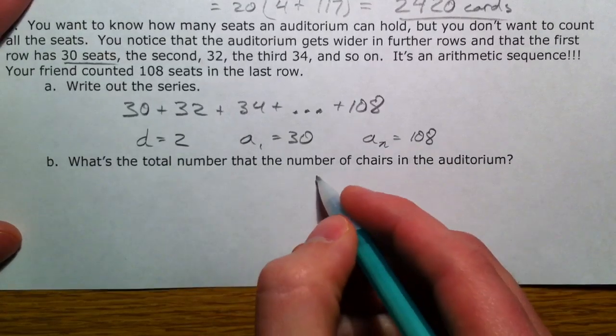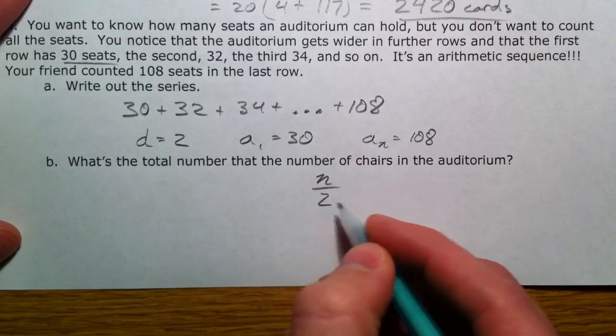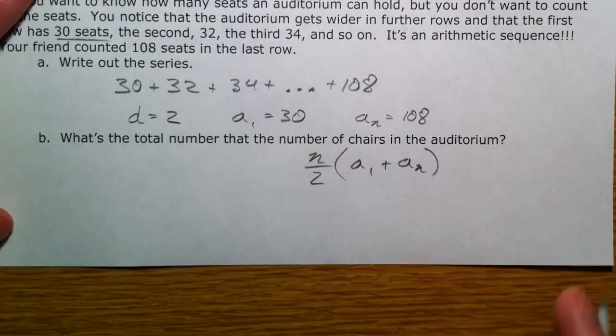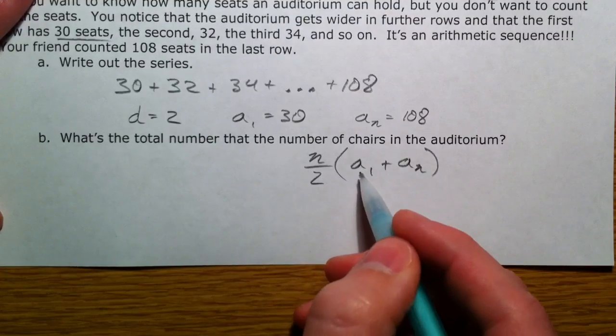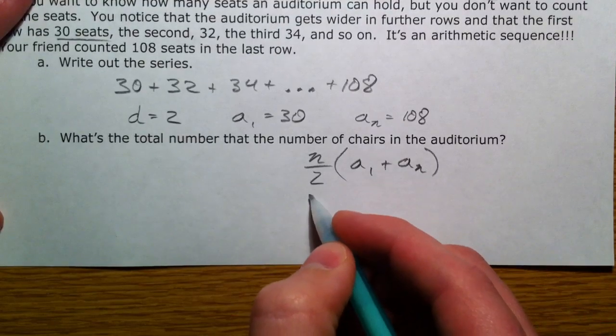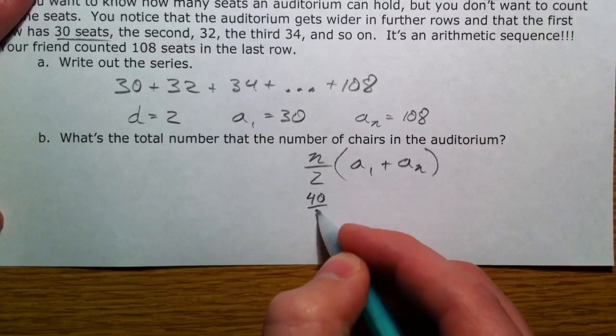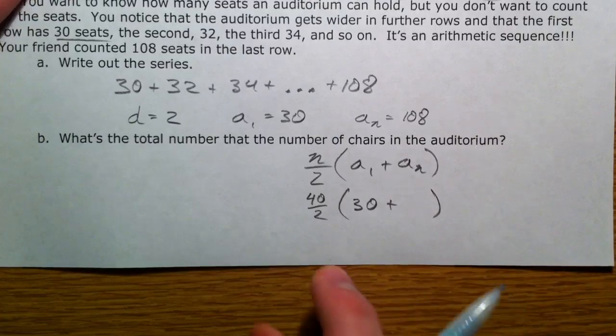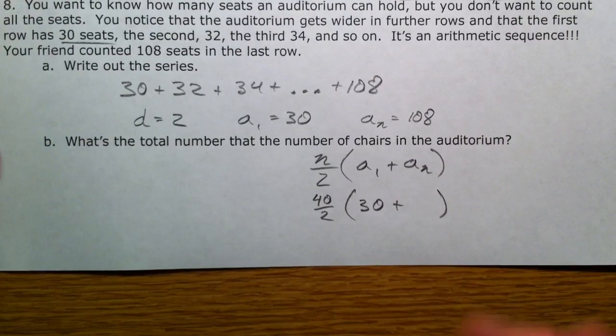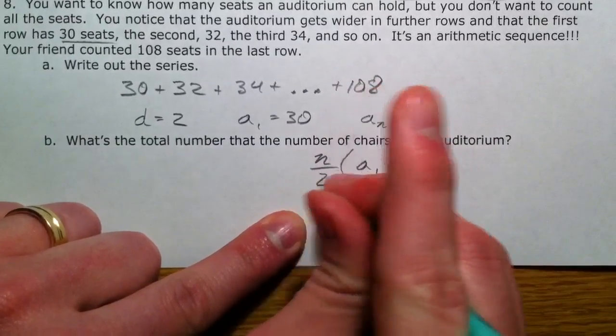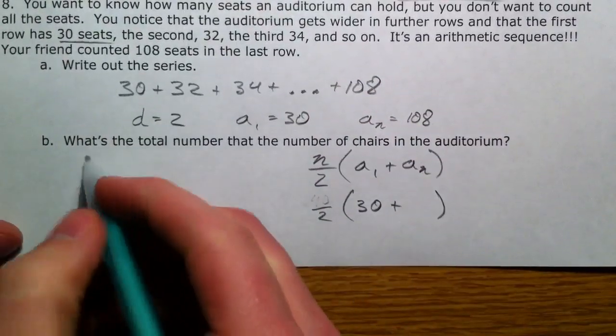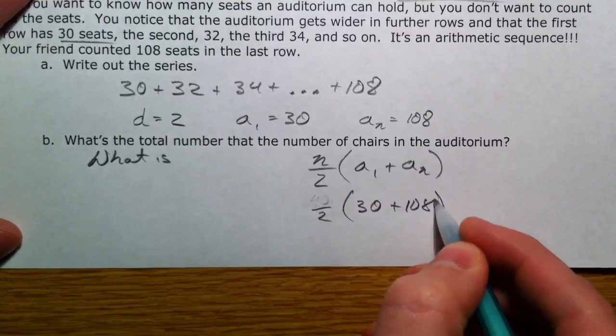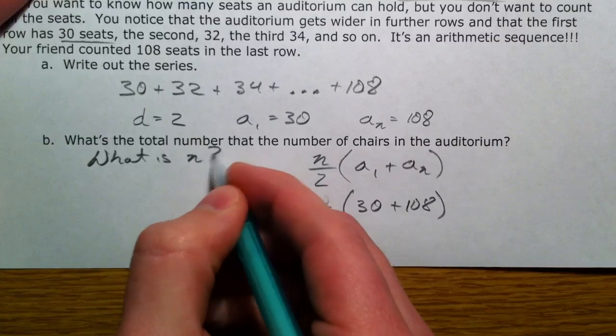Now, in our equation, we have n divided by 2, a sub 1 plus a sub n. Number of pairs, first and the last, just like we did 1 plus 100. So, number of pairs, we have 40 rows, our first term is 30, but we don't know our last term. And so, let's figure out, oh, sorry, we don't know 40. I know that because I've done the problem. So, we need to know what is n. We know that the last one is 108, but how many numbers are there? How many rows of chairs are there?